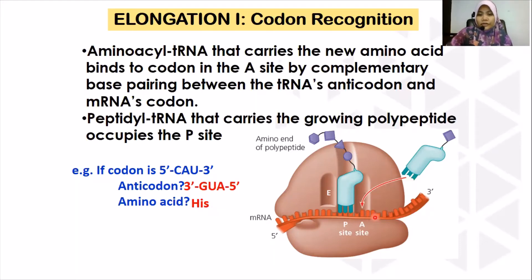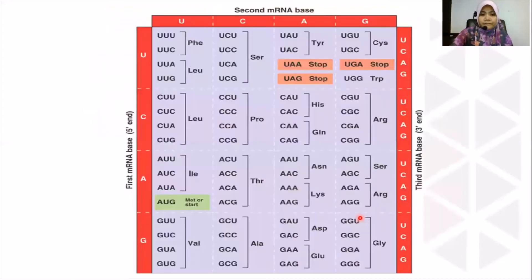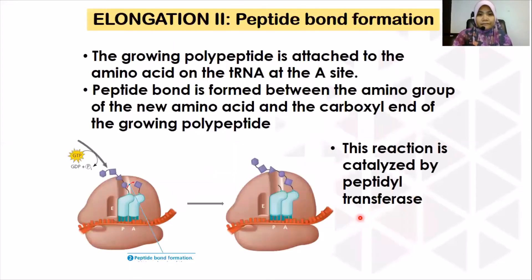Kordon mRNA pada A site ini akan dikenal pasti oleh antikodon tRNA, yang mana tRNA ini akan membawa amino acid yang persesuaian — amino acid yang dikodkan oleh kodon mRNA. So, this is the genetic code table for you to refer to, to find what type of amino acid is coded by the codon of mRNA at the A site.